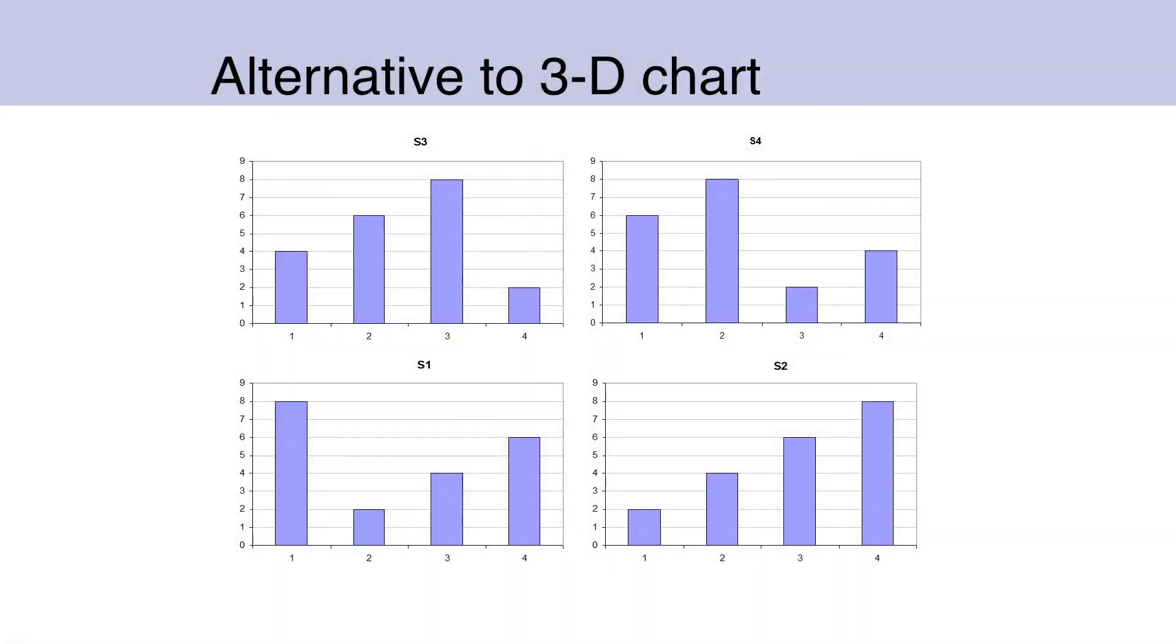What would I do instead of this? I would do four separate charts. I would fix one of the variables. In this case, I fixed the S's. And then I'd show the other two variables for each value of the S's.